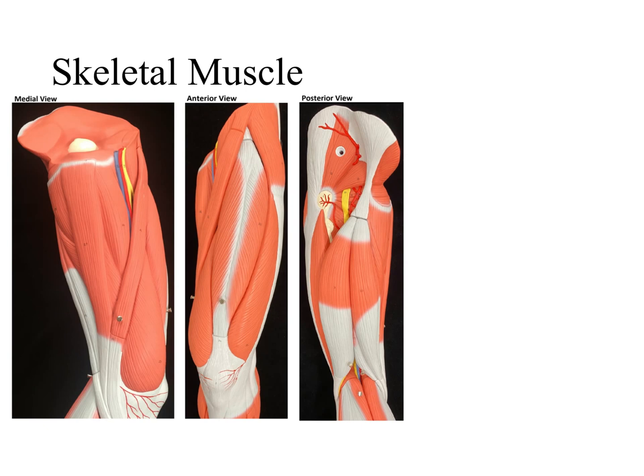We have the medial view, anterior view, and posterior view of the thigh. When we look at the anterior view, we can identify several muscles, such as the rectus femoris muscle. The rectus femoris muscle was named rectus because rectus means straight, and it's going straight down. Femoris because the bone we have in our thigh is the femur.